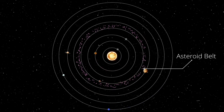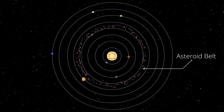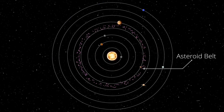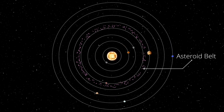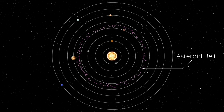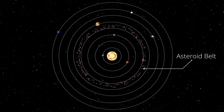Some asteroids do orbit in space near to Earth, and some are forced out of the asteroid belt by gravity and sent towards the outer solar system. Today, we will know what exactly is the asteroid belt, so let's begin.